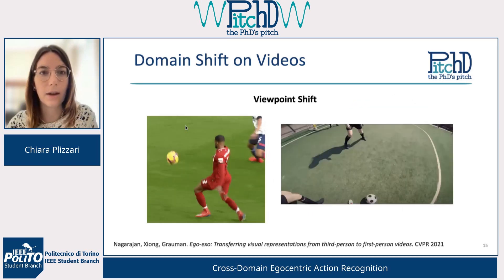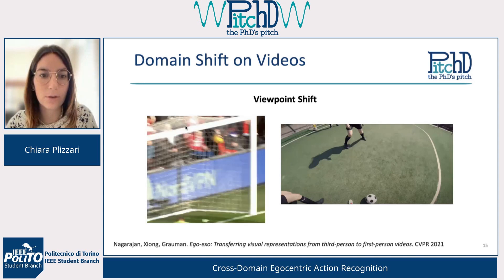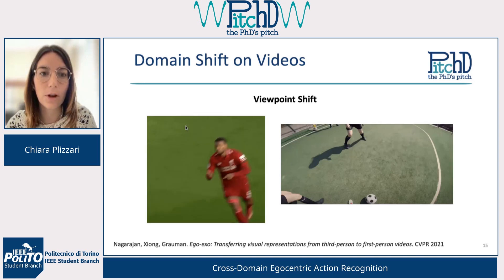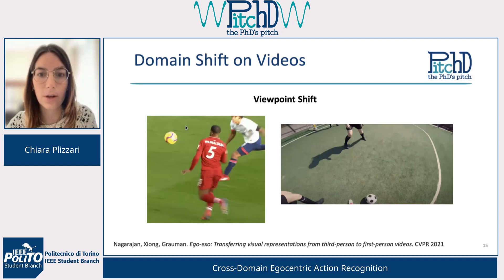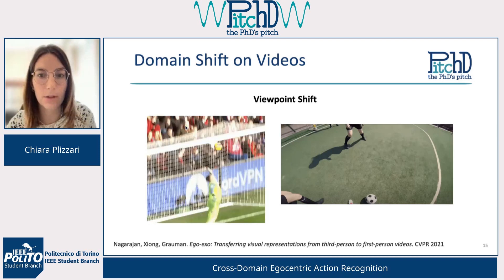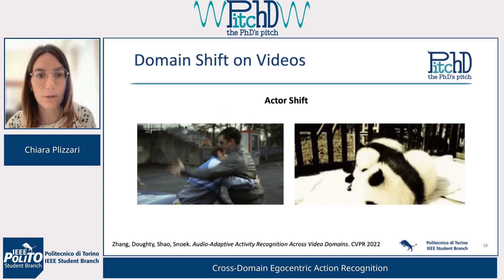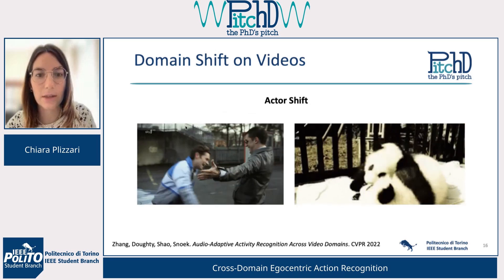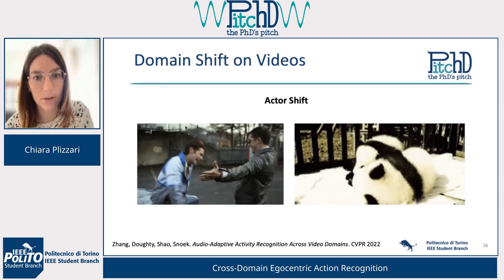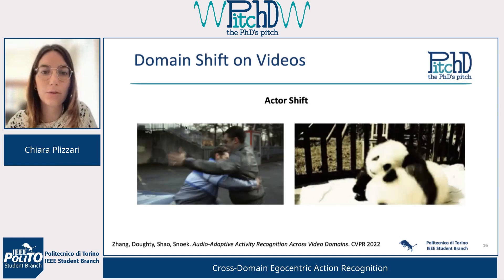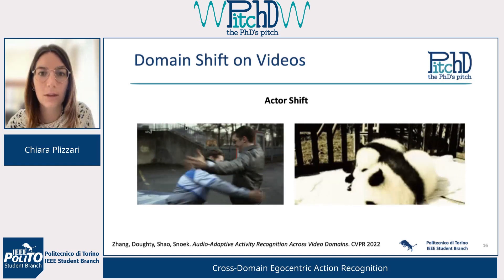There are different types of domain shift. We also have the viewpoint shift — videos captured from another person's point of view versus videos captured from the egocentric point of view. We can also have an actor shift, where the same action is performed by different actors, and this might introduce problems when training neural networks.